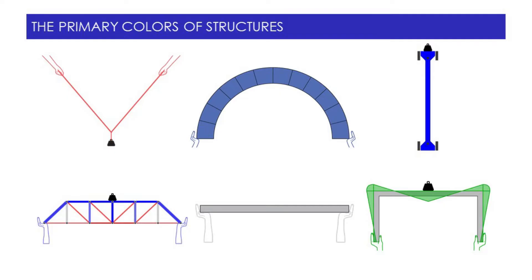If you remember, we had six primary colors of structures. We had the cable, the arch, the column, we put columns and cables together to make trusses, we filled in the trusses to make beams, and now we're going to take those beams, bend them, take them down and form a frame.